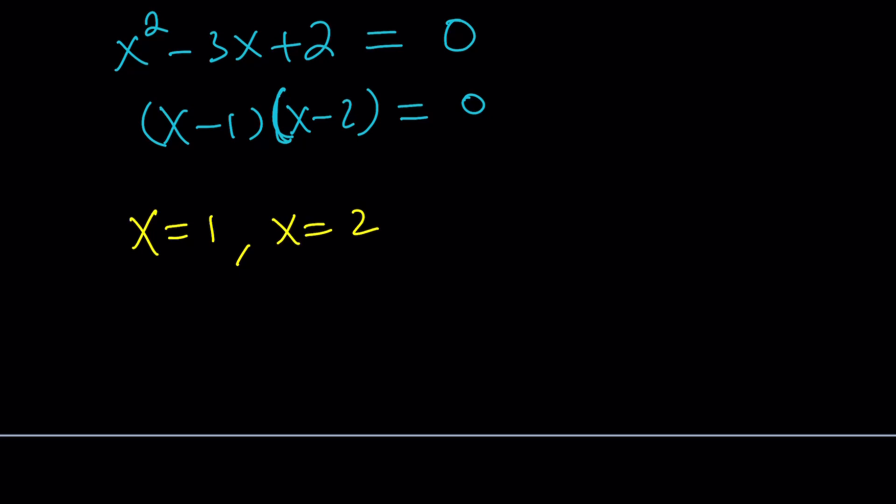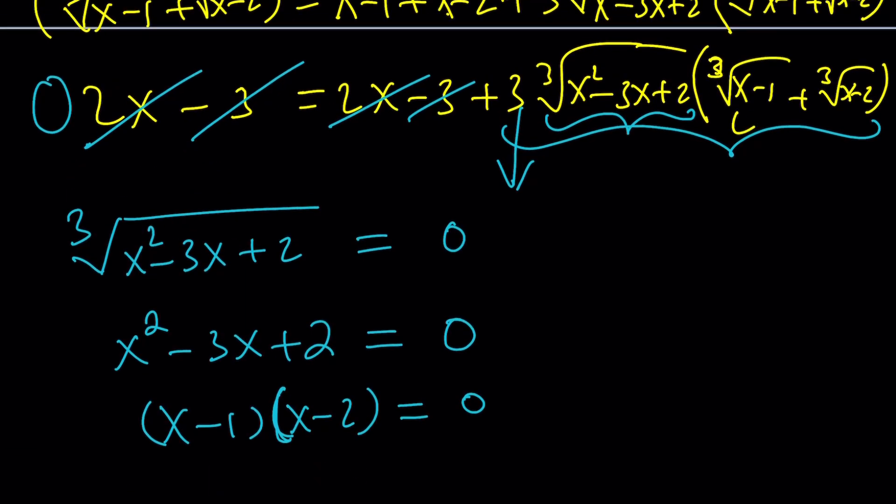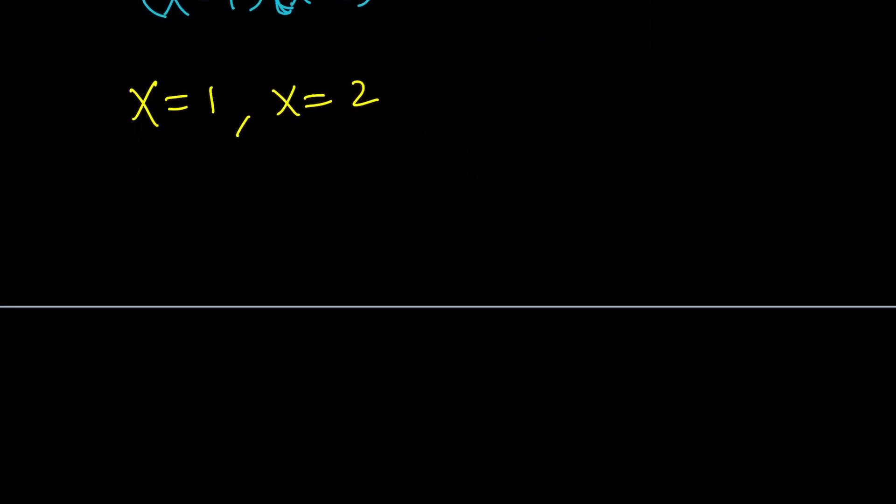Now, most of the time with radical equations, you may want to check your solutions, but since these are cube roots, they should work, but it doesn't hurt to check, right? So we're going to check everything at the end because we still have to look at another factor, which is this one. And that will be the cube root of x minus 1 plus the cube root of x minus 2 equals 0.